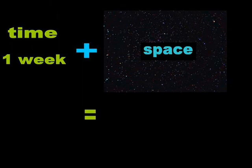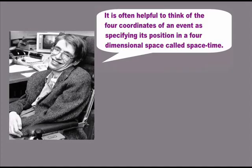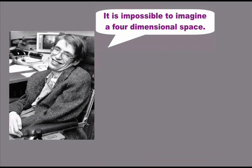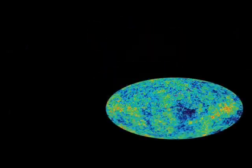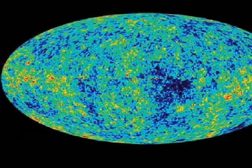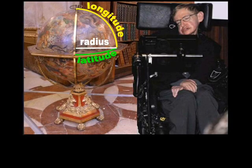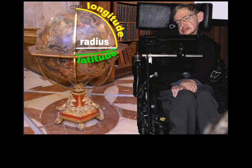This may explain why Hawking cannot even imagine the globe he claims to inhabit. 'It is often helpful to think of the four coordinates of an event as specifying its position in a four-dimensional space called space-time. It is impossible to imagine a four-dimensional space.' What is it that is preventing Hawking from watching a movie of an expanding balloon? The NASA Gravity Probe B site does not justify the four dimensions of space-time with coordinates as Hawking does, but with the three dimensions of physics — height, width, and length — and a number line known as time.